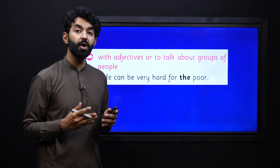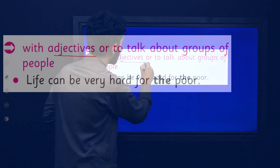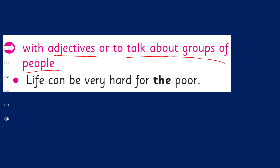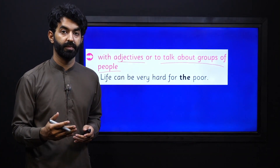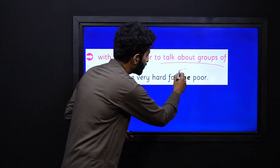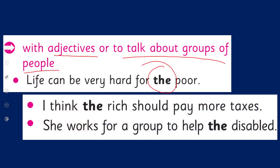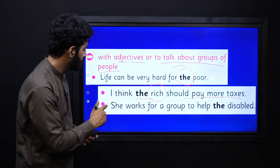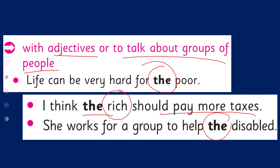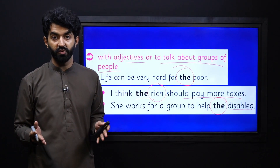We also use articles with adjectives to talk about groups of people. 'Life can be very hard for the poor' — we are talking about the poor group, the category, the class, so that's why we are using this definite article here. 'I think the rich should pay more taxes' — obviously, we are talking about this group of rich people, that's why we are using 'the' before it. 'She works for a group to help the disabled' — we are talking about people who are disabled, that's why we are using it.